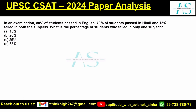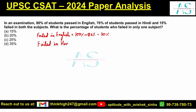The pass values are given, so let's find the percentage of students who failed in English and Hindi. 80% passed, so failed would be 100 minus 80, which is 20%. For Hindi, 70% passed, so 100% minus 70% gives us 30% failed in Hindi.